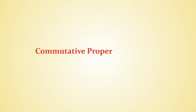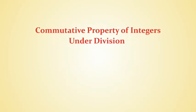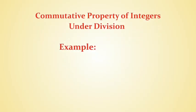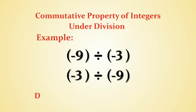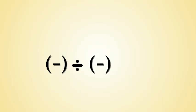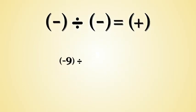Let's proceed to the commutative property of integers under division. Consider minus 9 divided by minus 3, and minus 3 divided by minus 9. Do both have the same value? When we divide a negative integer by a negative integer, the quotient is a positive number. So minus 9 divided by minus 3 equals plus 3, which is an integer.